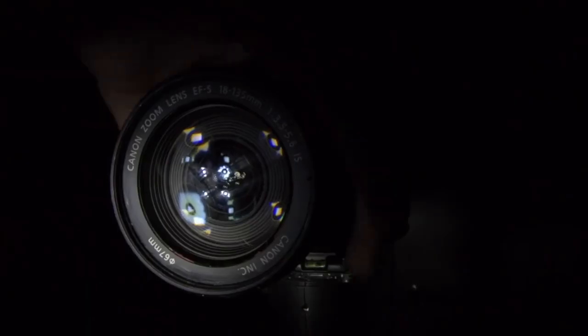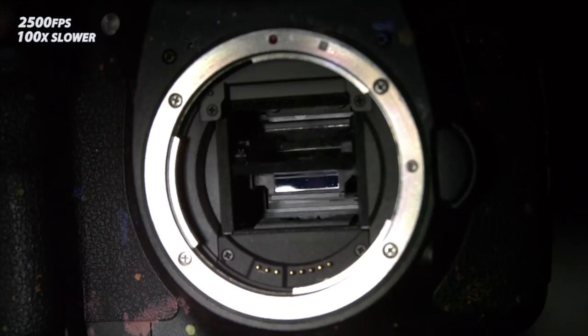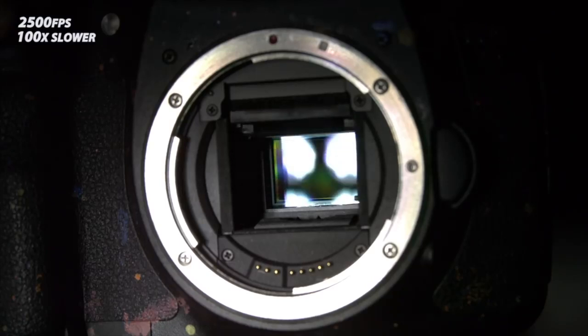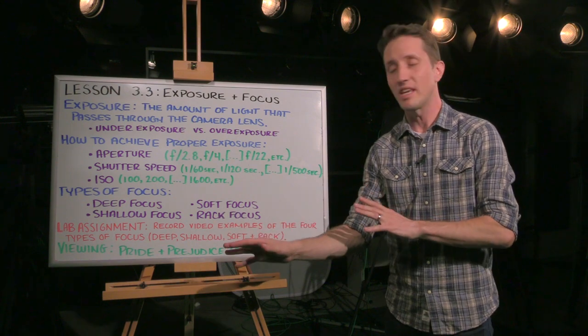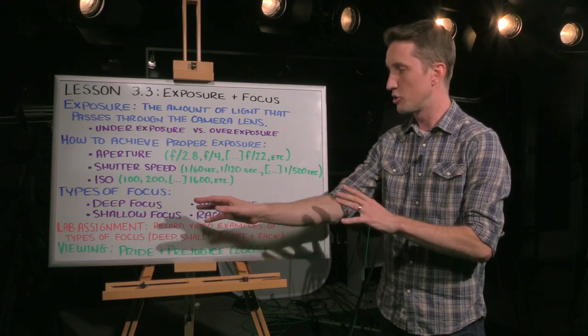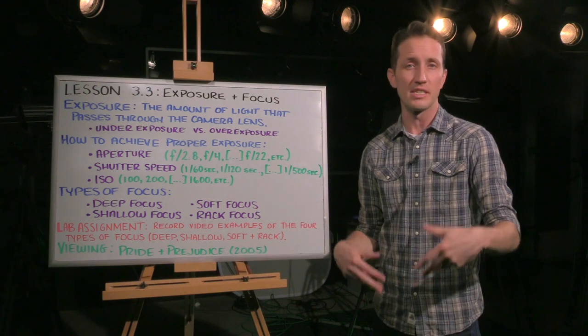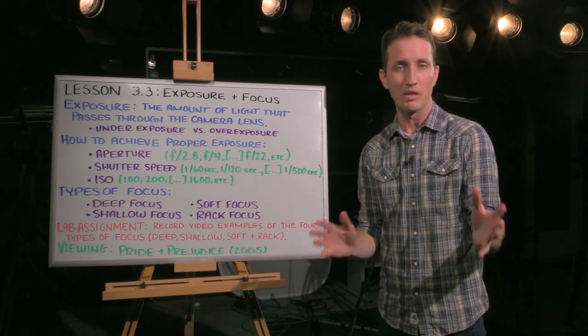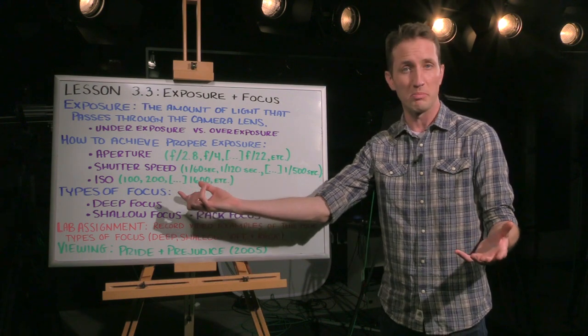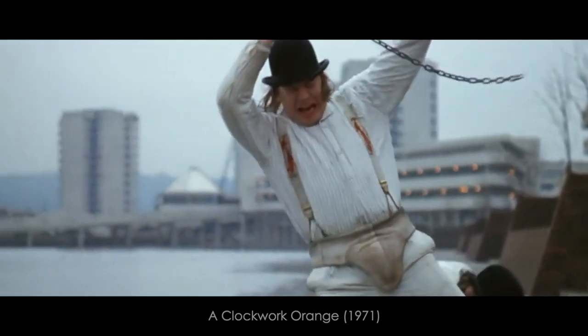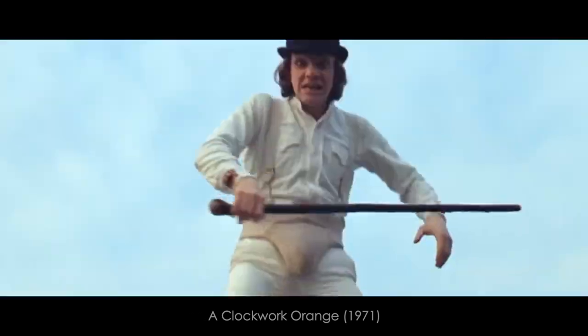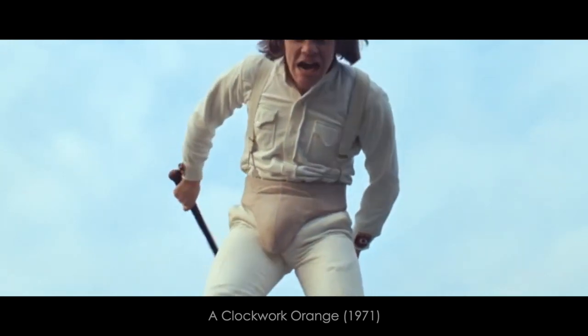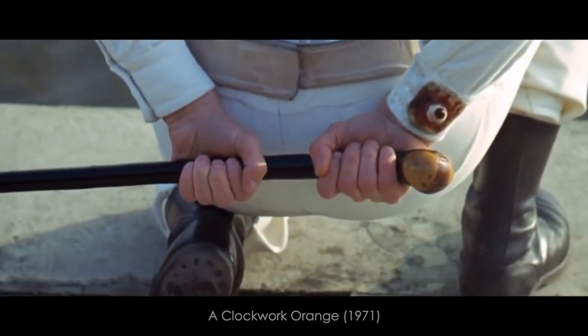And then with shutter speed, we're talking about how long you are allowing the light to pass through the lens onto the film or onto the digital reader. Now, typically with video, you want your shutter speed to be double your frame rate. So let's say we're shooting 30 frames per second, which is pretty standard in video. You would want your shutter speed to be 1 over 60. If you're shooting 60 frames per second because you want to get a nice slow motion shot, then you would increase the shutter speed to 1 over 120 seconds.